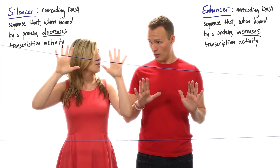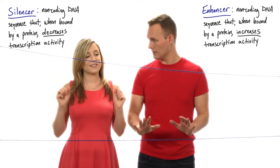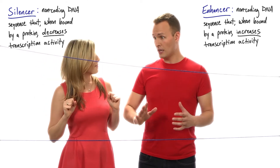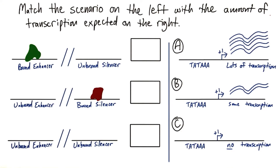Now, if we know that the effect of an enhancer or a silencer is because of whether or not the protein is bound, I want you to look at the following scenarios and tell me which scenario matches with which level of transcription. This could be a little tricky, so focus on each picture and see if you can match which ones belong to each other. Match the scenario on the left with the amount of transcription expected on the right.